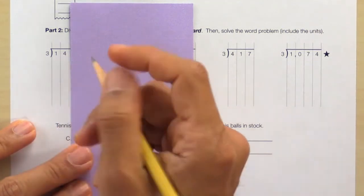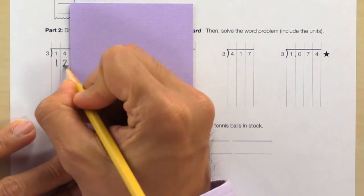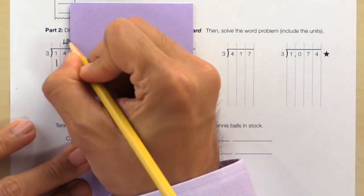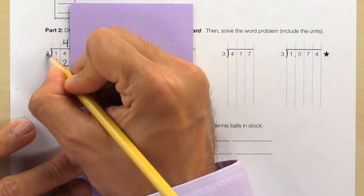divided by 3? Yes. If 12 divided by 3 equals 4, then 4 times 3 equals 12.